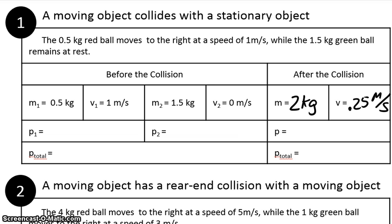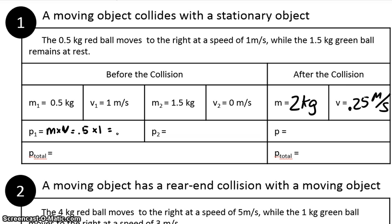Let's start with before the collision. We are going to calculate the total momentum before the collision. In order to calculate total momentum, we have to find our two individual momenta and then add them together. Starting with our first object, the red ball: it had a mass of 0.5 kilograms and a velocity of 1 meter per second. Momentum equals mass times velocity, so that's 0.5 times 1, which gives us 0.5 kilogram meters per second.